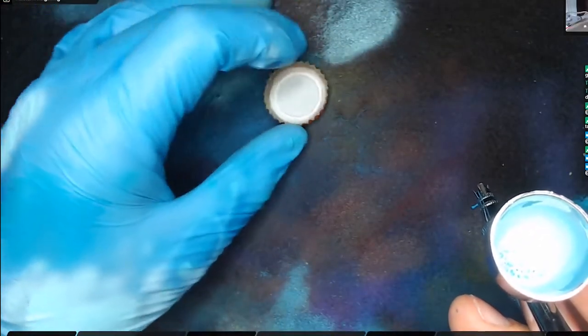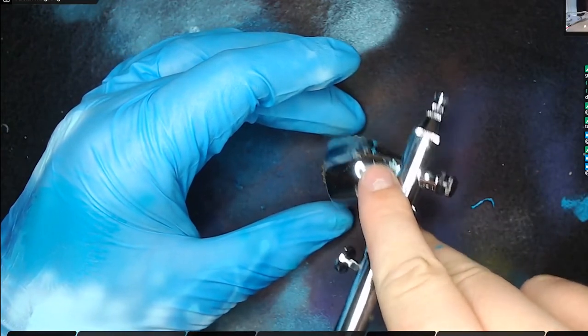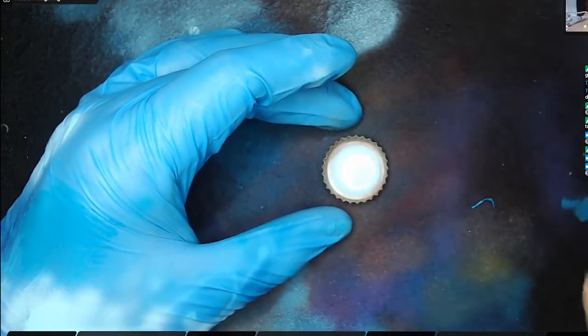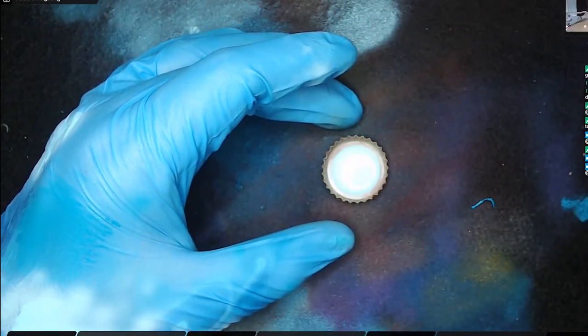But now we're done with the airbrush, so we're just going to pour out the paint, the highlight color, into a pot and we're going to use this again in a few minutes. So we'll just pour that out and give the airbrush a good clean and we'll save that for a few minutes time.